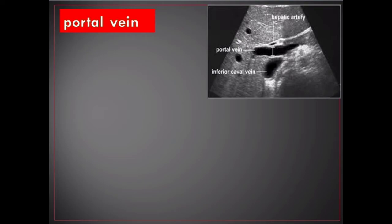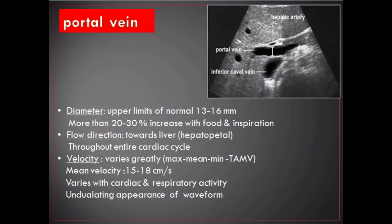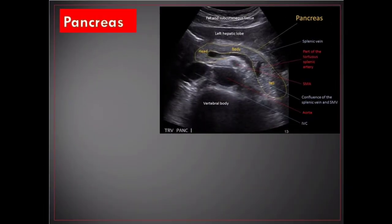The greatest anterior-posterior diameter is measured at the site where the hepatic artery crosses the portal vein. The upper limits of normal portal vein diameter are between 13 and 16 millimeters, with more than 20 to 30 percent increase with food and inspiration. Flow direction is towards the liver — hepatopetal — throughout the entire cardiac cycle.